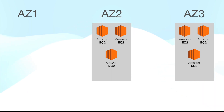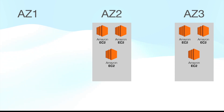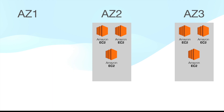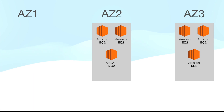I remember this exact same scenario appeared in my AWS Solutions Architect Associate exam — they were asking about how many instances you need in each AZ so that if AZ1 goes down, your application can still run with the required number of instances. So this is important to know.